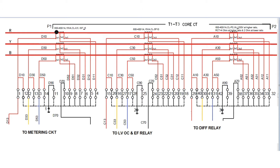For the metering core, the CT specification has two ratios: one is 600/1 and another is 400/1. The CT burden rated is 50VA, class is 0.5, and instrument security factor is less than or equal to 5. That is the specification of the metering core CT.